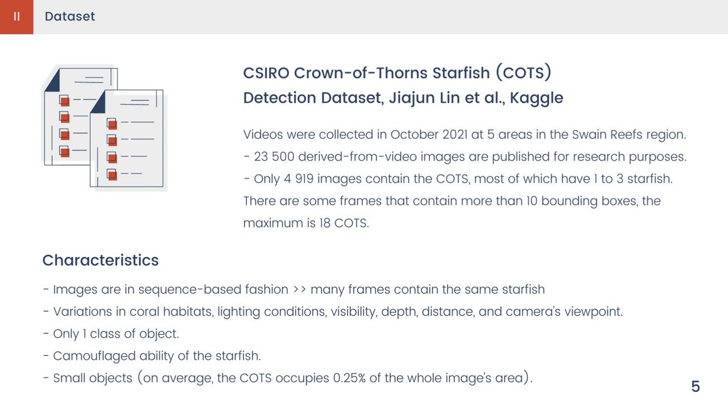Therefore, their shapes are the unique differentiation features. Finally, the starfish is very small when we compare its area to the whole image area.